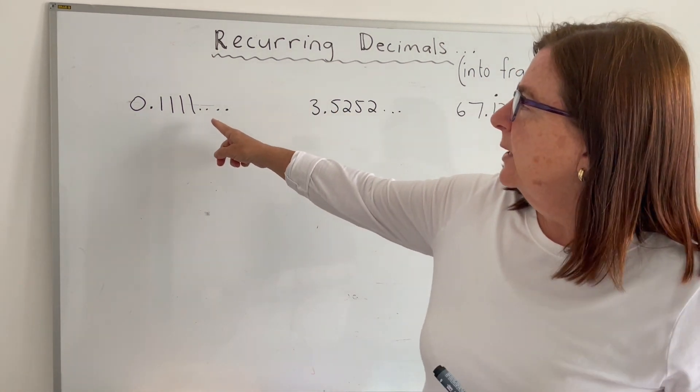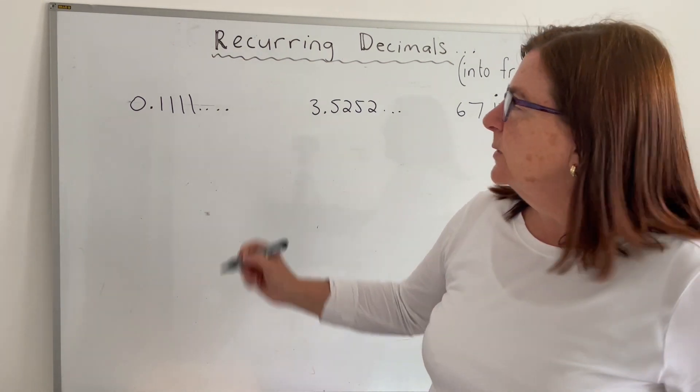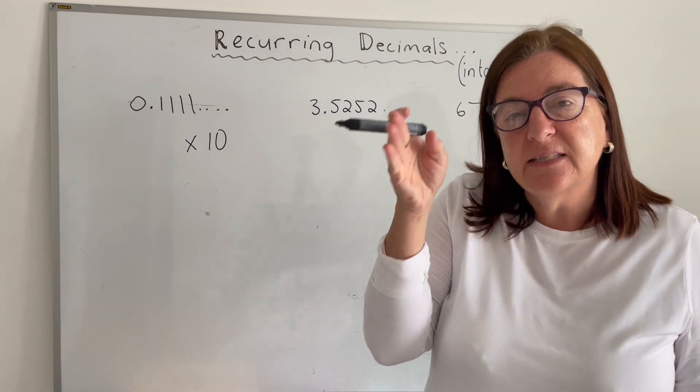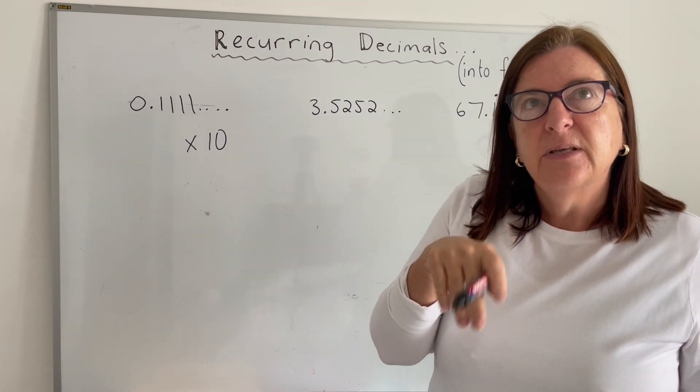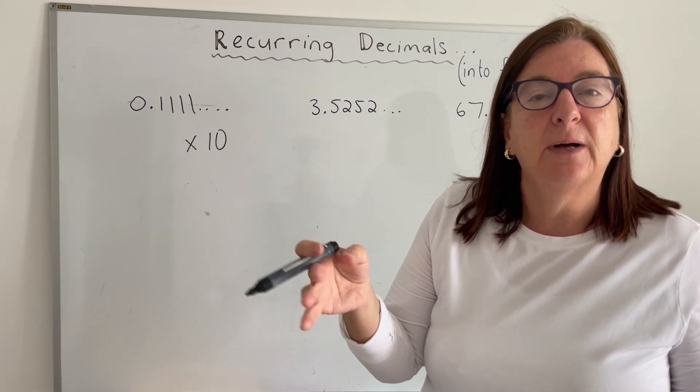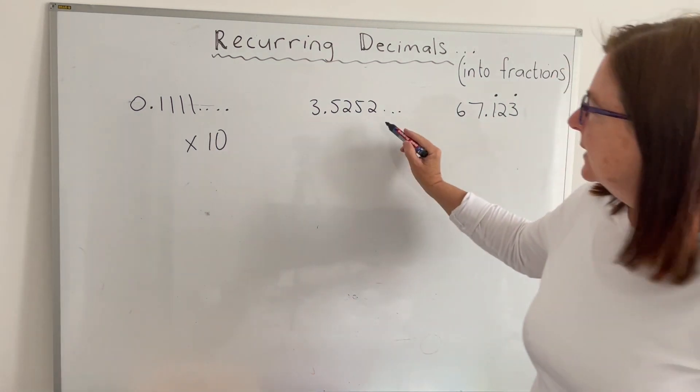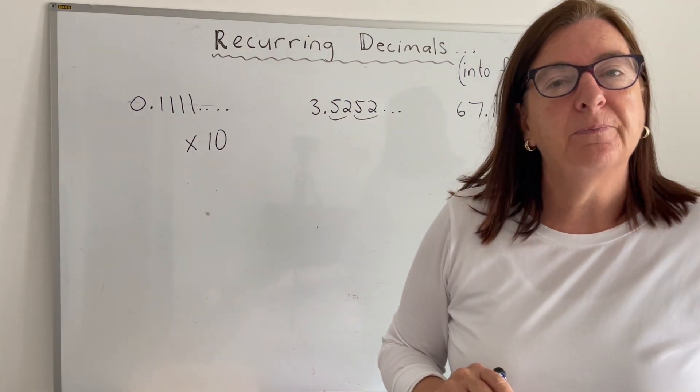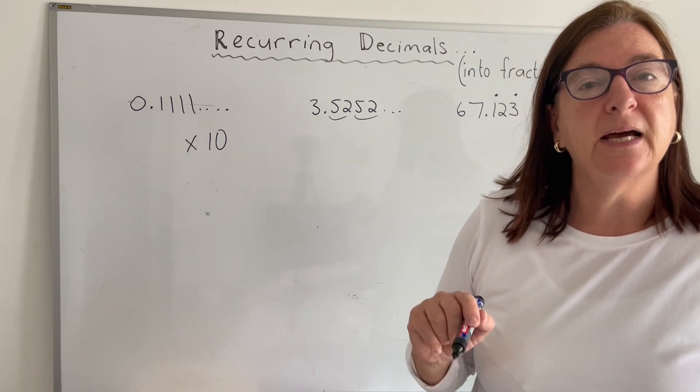Point 1111. This one, once it's equal to x, we'd have to multiply both sides by 10 because there's only one decimal that's recurring. So we multiply by 10. In this one here, the recurring decimals, there are two of them. So here we would multiply both sides by 100.